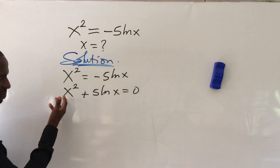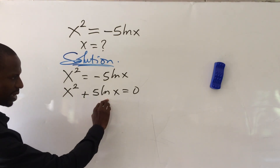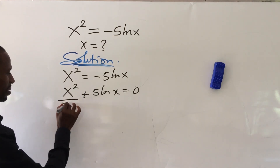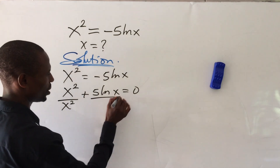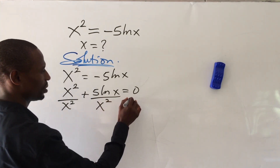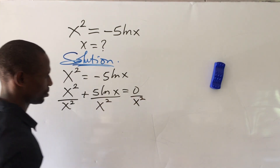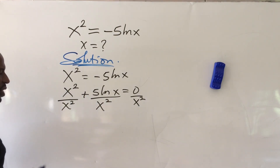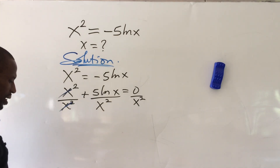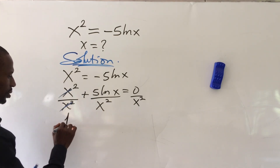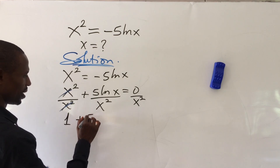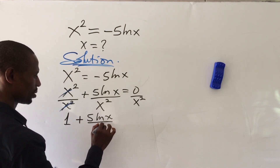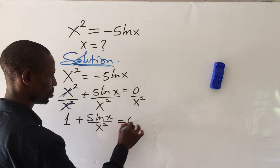Now let's divide by x squared. I'll tell you why we divide by x squared and not by 5 ln of x. If we divide both sides by x squared — whatever you do to one side you must do to the other — we are now left with 1 plus 5 ln(x) all over x squared, equal to 0.